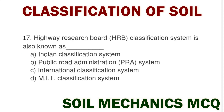Next question: the Highway Research Board (HRB) classification system is also known as option A Indian classification system, option B public road administration system, option C international classification system, option D MIT classification system. The correct answer is option B public road administration system.